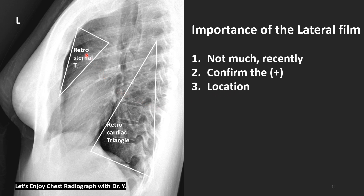Let's see these two triangular structures. One is the retrosternal triangle. As the name implies, it is behind the sternum. And number two is the bigger one, the retrocardiac triangle. As the name implies, it is behind the heart. These two triangular areas are actually black, not white, because there are no remarkable organs there. So if they appear white, then there must be something wrong — disease is present.